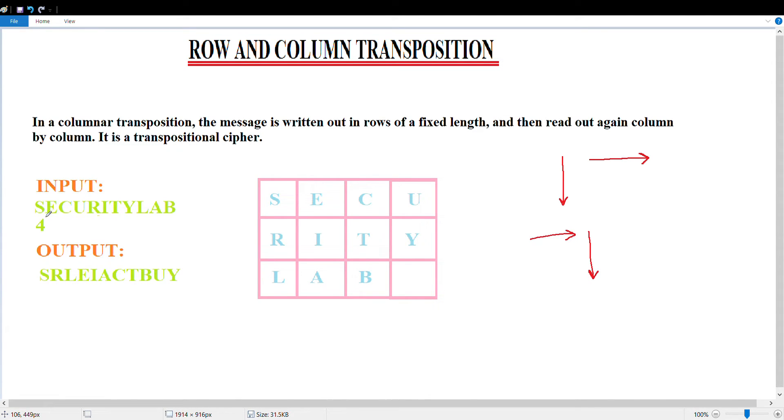So here we have the plaintext to be 'security lab' and the key to be four. It is written in fixed length, and the fixed length is determined by the key. We have the key as four, so we have four columns. We write in a row manner: 'security'